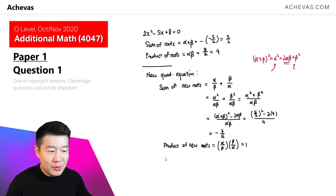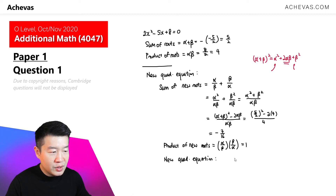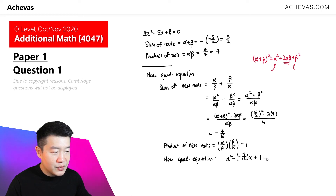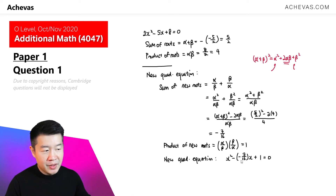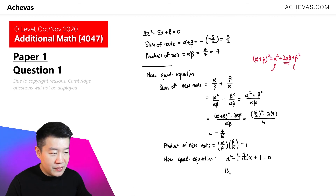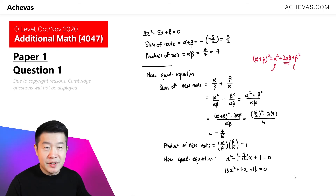This helps us derive the new quadratic equation. The new quadratic equation is going to look like x squared minus the sum of its roots times x plus the product of roots equals 0. Multiplying through by 16 gives us 16x squared plus 7x plus 16, equal to 0.